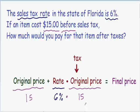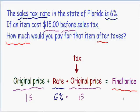Moving on to the last line of the word problem, it says how much would you pay for the item after taxes? The price after taxes would be our final price, and we don't know what it is because it's asking us how much. Since we don't know what it is at the moment, that's what we need to find out. We can call the final price anything we want, so we'll just call it x. Now we have rewritten this word problem as an equation, and we just need to solve for our final price, x.